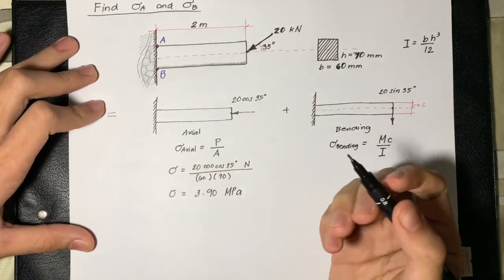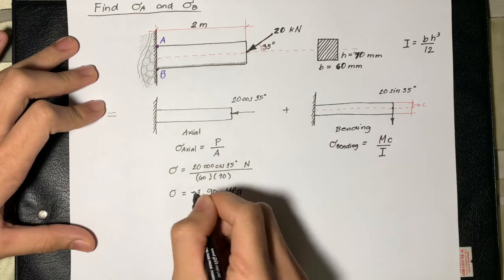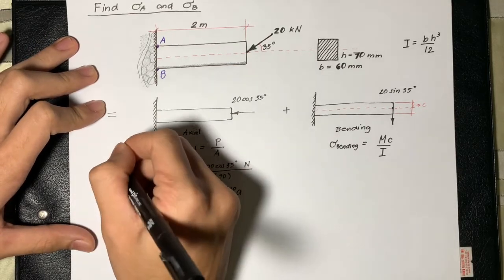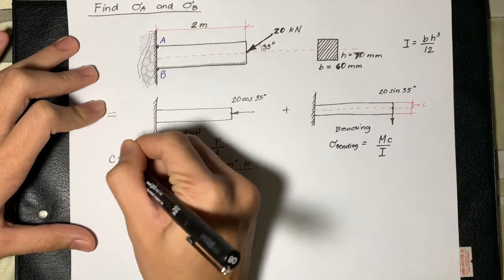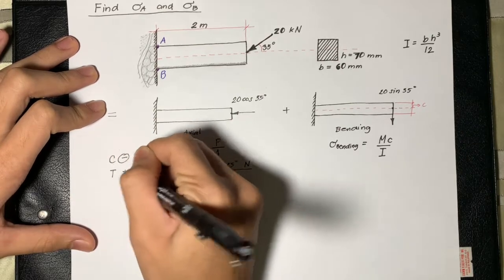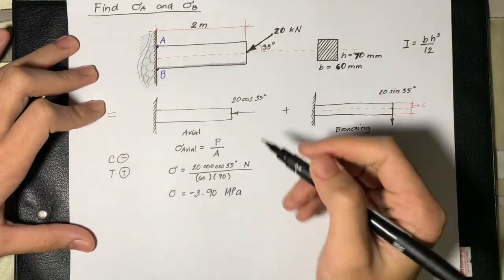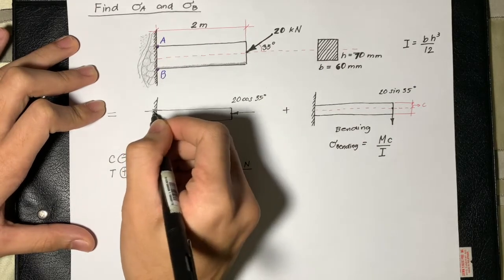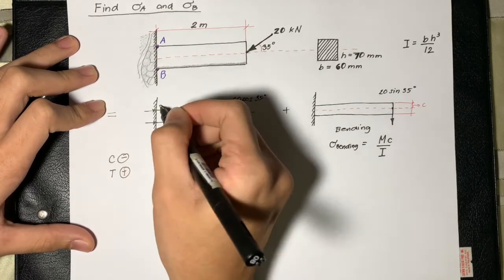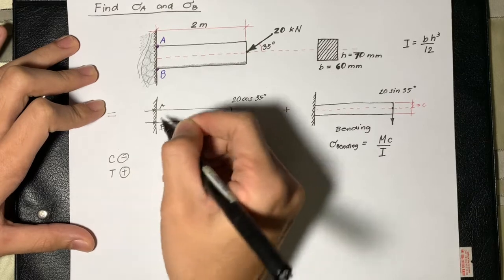Since A and B experience compressive stress, we will make the answer negative because compressive stress is negative while tensile stress is positive. Now we will draw the compressive stress at A and B.